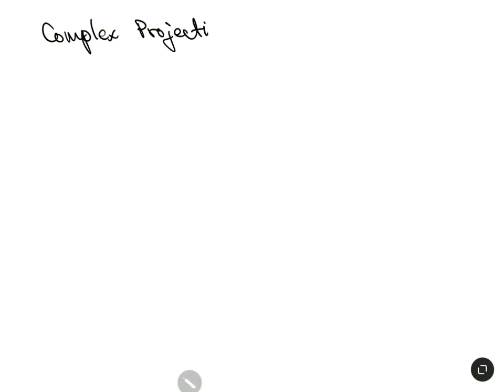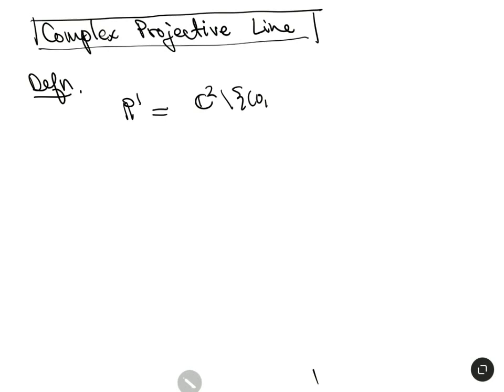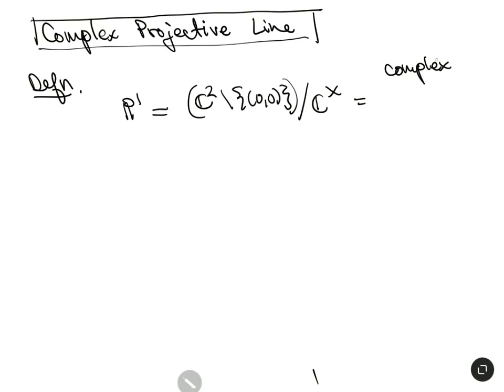There's a third description of the compactified complex numbers given by complex projective space, or the complex projective line. Let's define what the complex projective line is — this is our preferred version. P¹ is defined as ℂ² with the origin removed, modded out by the units in ℂ (i.e., ℂ*). This is the complex projective line.